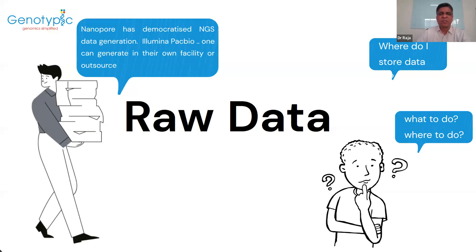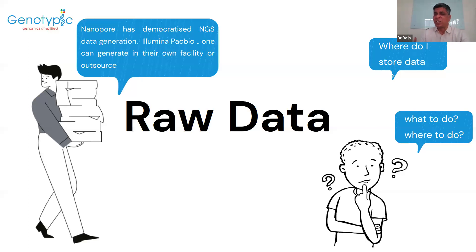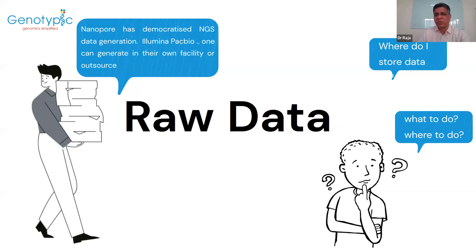So what happens — you receive the raw data sometimes from your own labs, sometimes from a collaborator, sometimes from elsewhere, or you generated your own data. This is where the problem starts. Nanopore has democratized data generation and lots of people are generating it themselves. Illumina and PacBio are usually outsourced or done in their own facility, but usually done by someone else.